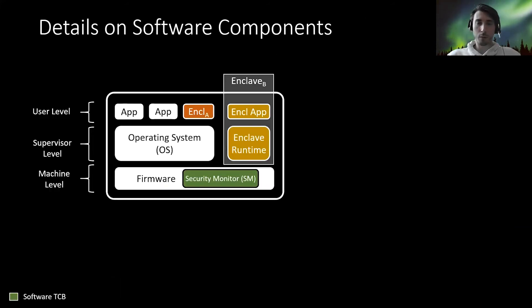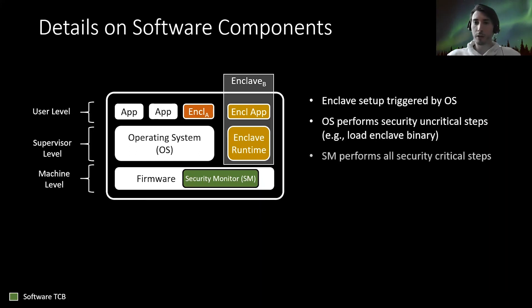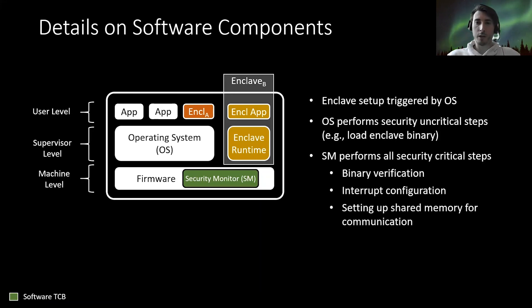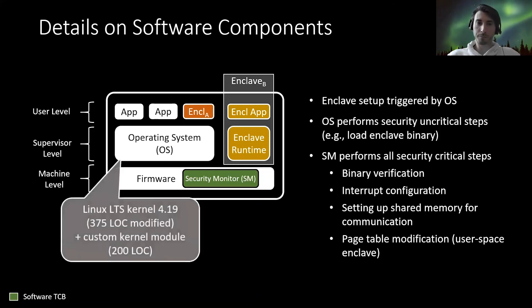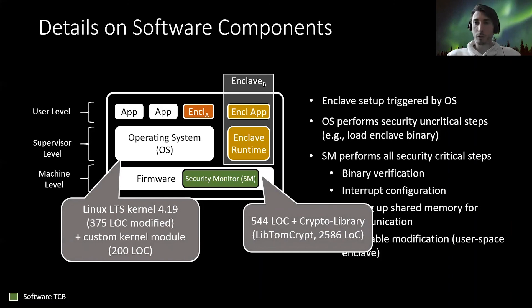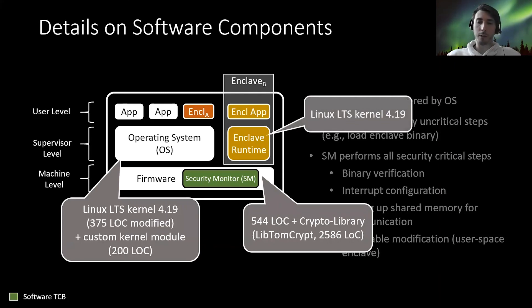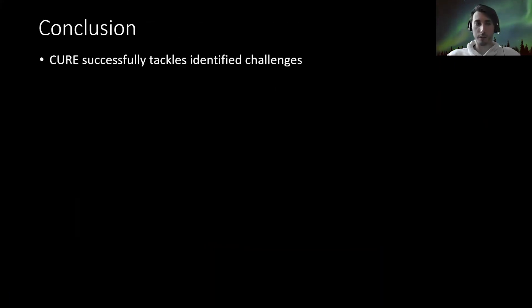Looking at the software components, the enclave setup is triggered by the OS, which performs all security-uncritical tasks. The security monitor performs all security-critical tasks such as binary verification, interrupt configuration, setting up shared memory for communication, and page table modification for user space enclaves. For kernel space enclaves, page table modification is not required since memory management is handled by the enclave runtime. In our prototype we use the Linux kernel as the OS, and the security monitor is small enough to be verified. For enclave B we also use the Linux kernel as the enclave runtime.